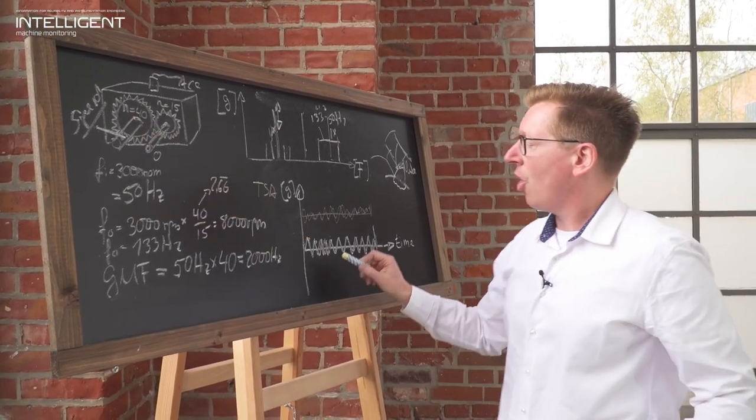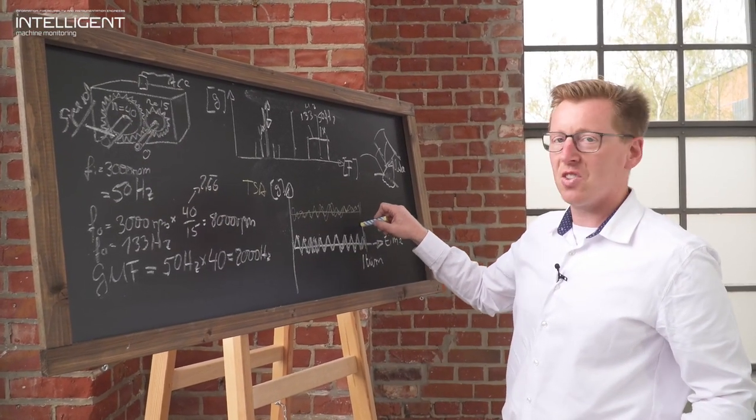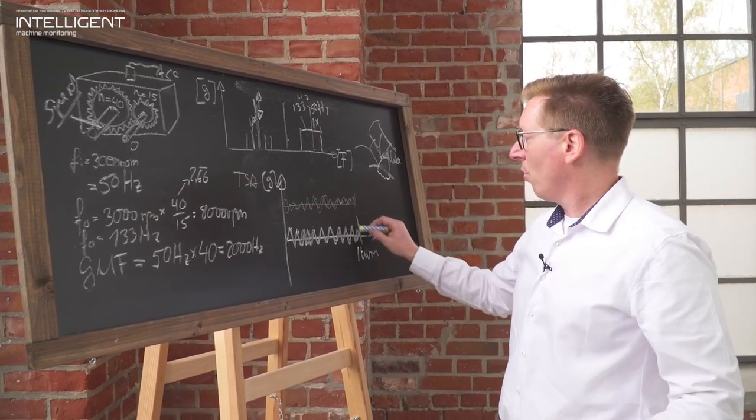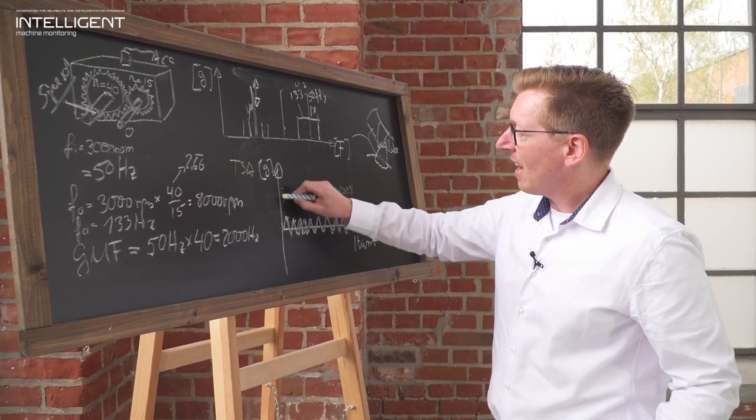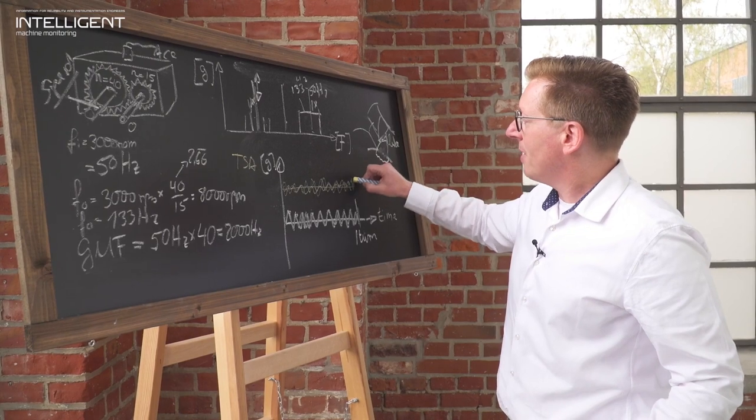The same would be applicable for a TSA. If you limit the full turn to the 15 tooth wheel, the 40 tooth wheel will not influence the TSA because it's not synchronous. It's not synchronous to the full turn data acquisition and will over time eliminate itself.